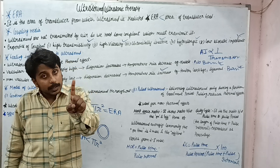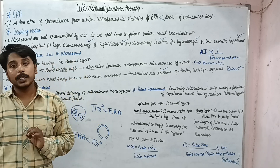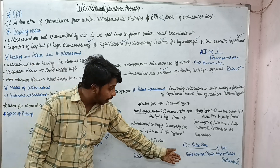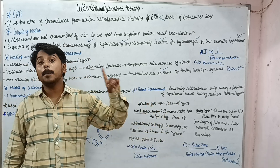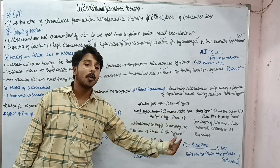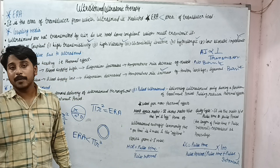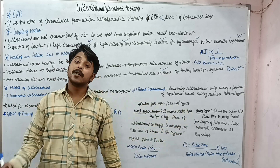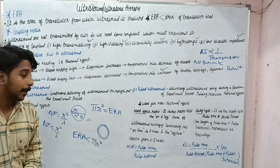Duty cycle is the ratio of pulse time divided by pulse period. Pulse period equals pulse time plus pulse interval — the total period. So duty cycle = pulse time / (pulse time + pulse interval), multiplied by 100 to give a percentage. Mark space ratio is the on-to-off time ratio, while duty cycle is pulse time to total pulse period, expressed as a percentage.